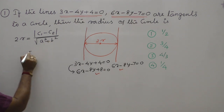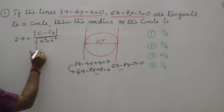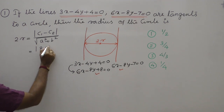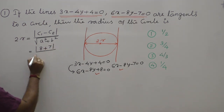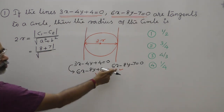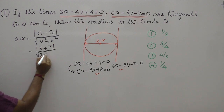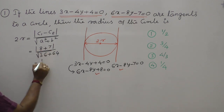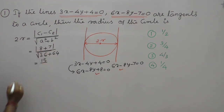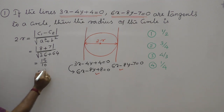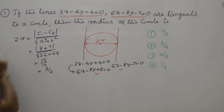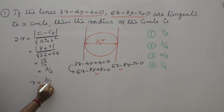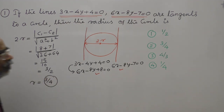Substituting: mod of c1 minus c2 — c1 is 8, c2 is minus 7, so minus into minus gives plus 7; numerator is 8 plus 7 equals 15. Denominator: a is 6, a squared is 36, b squared is 64, total 100, root 100 is 10. Diameter equals 15 by 10 equals three by two. Radius is half of diameter — three by four. Therefore the answer is the second option.